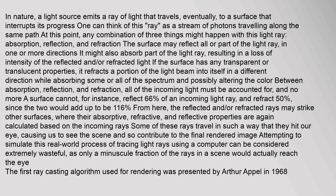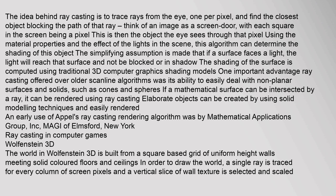The first ray casting algorithm used for rendering was presented by Arthur Apple in 1968. The idea behind ray casting is to trace rays from the eye, one per pixel, and find the closest object blocking the path of that ray. Think of an image as a screen door, with each square in the screen being a pixel. This is then the object the eye sees through that pixel. Using the material properties and the effect of the lights in the scene, this algorithm can determine the shading of this object.